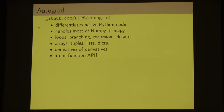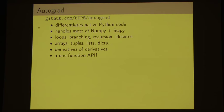The other nice thing is we can use rich data structures throughout specifying our models. So instead of having to flatten our gradients, we can use things like dicts or tuples of arrays, however nested you want. We have easy access to derivatives of derivatives. And the most beautiful thing is that we expose all this functionality through a single function, `grad`, which just gives you the gradient of the function that you wrote.